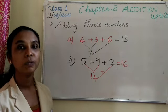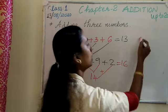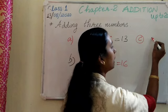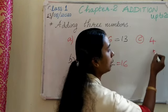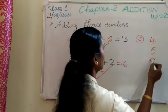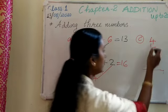Then next we do vertically. Question number C. Copy down this to your notebook. This is how we add vertically. 4 plus 5 plus 9. You look at this.